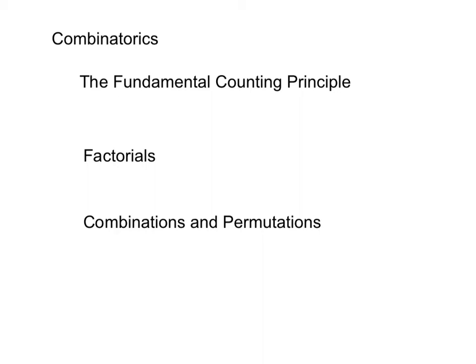There are four main things we're going to look at in this video. We're going to look at the fundamental counting principle. The fundamental counting principle says that if you have so many of one thing, and so many of another thing, and so many of something else, and you want to know how many different ways you can group or pair these things, then you take the number of the first amount and multiply it by the number of the second thing, times the number of the third thing, and so on. So if you said, I have four shirts and three pants, how many different outfits can I make? It's kind of coming from that.